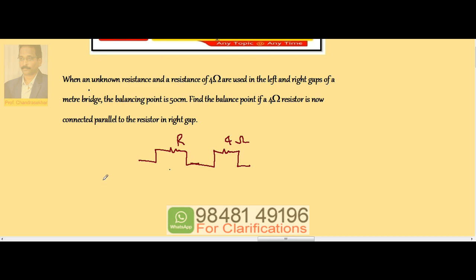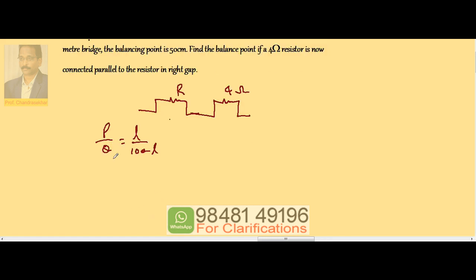If I use the equation P by Q equals L by 100 minus L, here P is R, Q is 4. This is 50 by 50, so R equals 4. The resistance in the left gap is also 4.